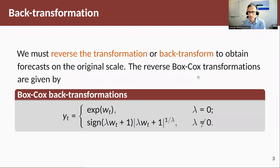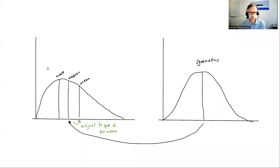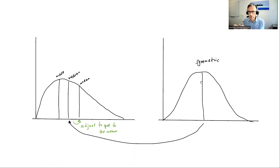Once we take a transformation to forecast, we need to back-transform to the original scale, as we're interested in that. However, that creates a problem. Assume that we start with a distribution on the left and we take a transformation so that it becomes a symmetric distribution — we take a log transformation of this positive skewed distribution and it becomes a symmetric distribution.